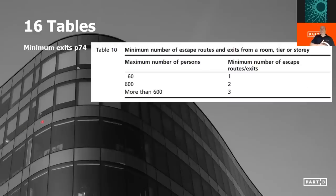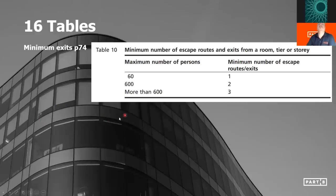Table 10 is probably familiar — it's exactly the same as in ADB, giving the minimum number of escape routes from a room, tier, or storey. Please remember this is the minimum number of escape routes — if you cannot get to your exit point within a specified travel distance, you've got to put in additional exit points.